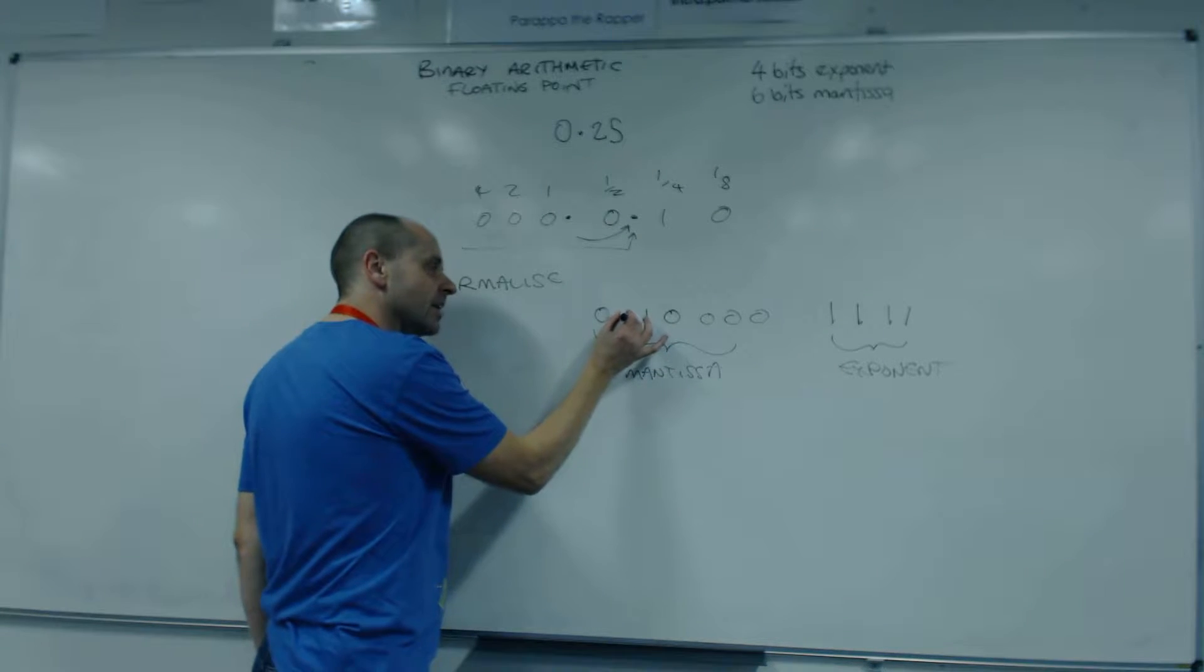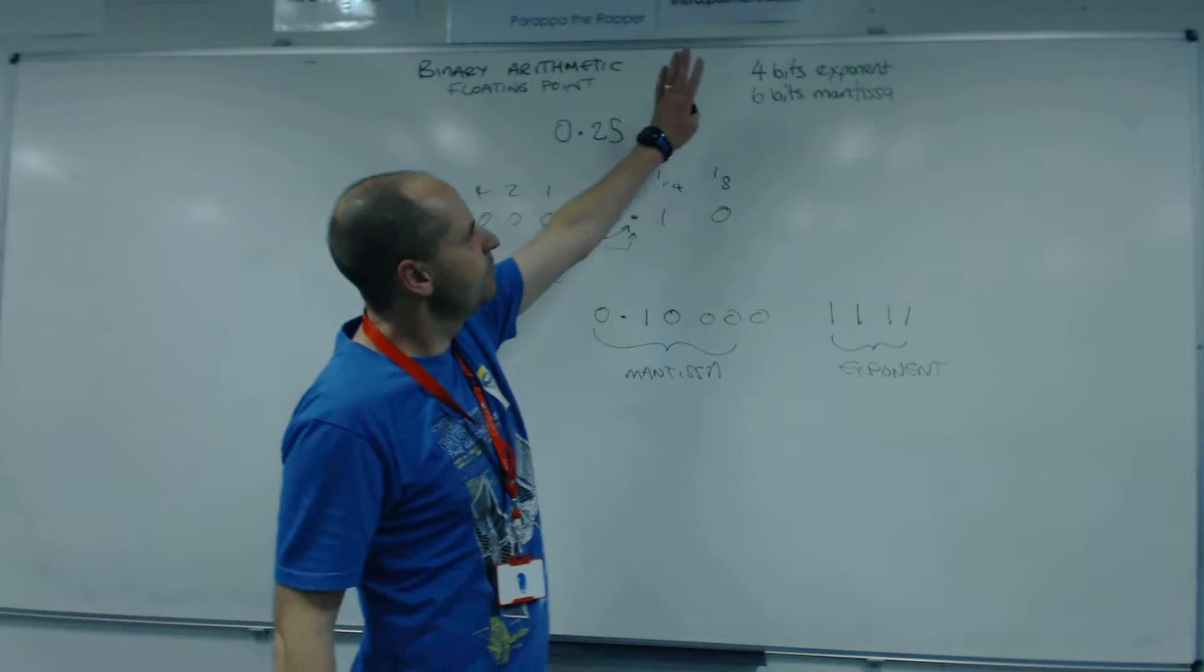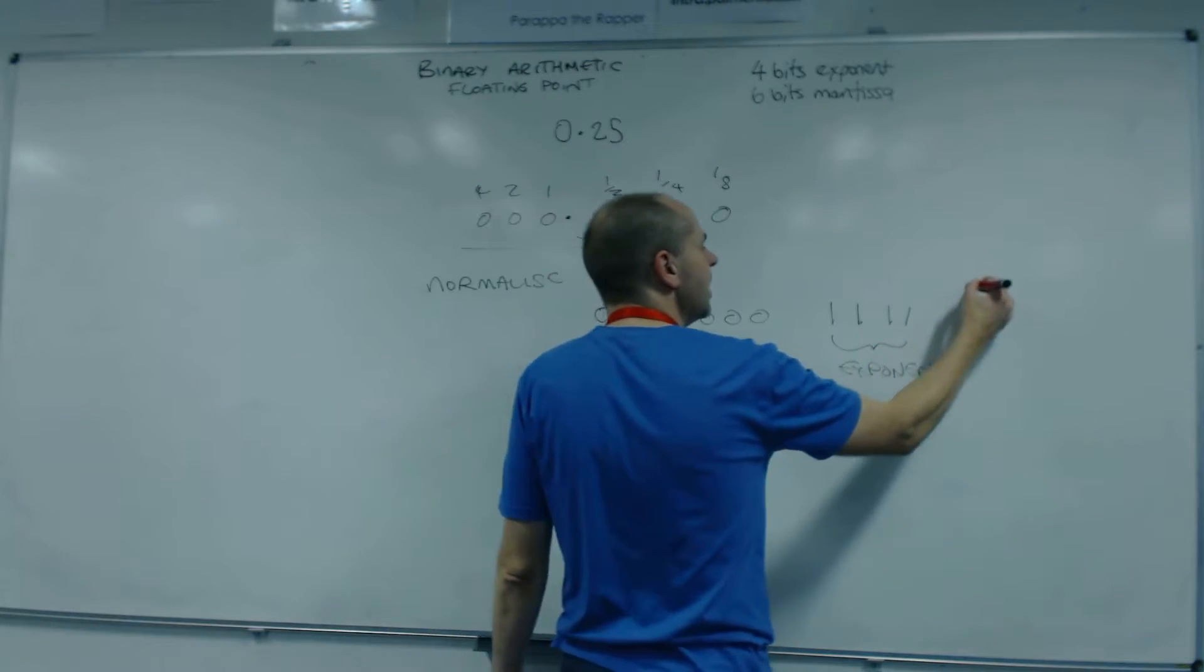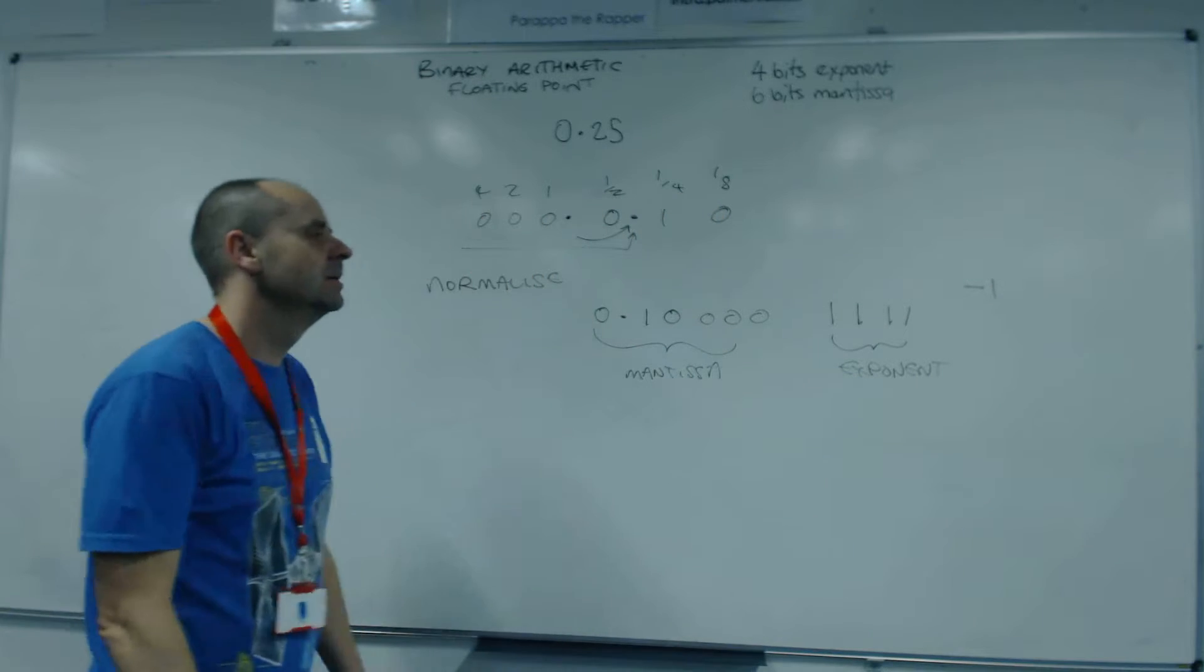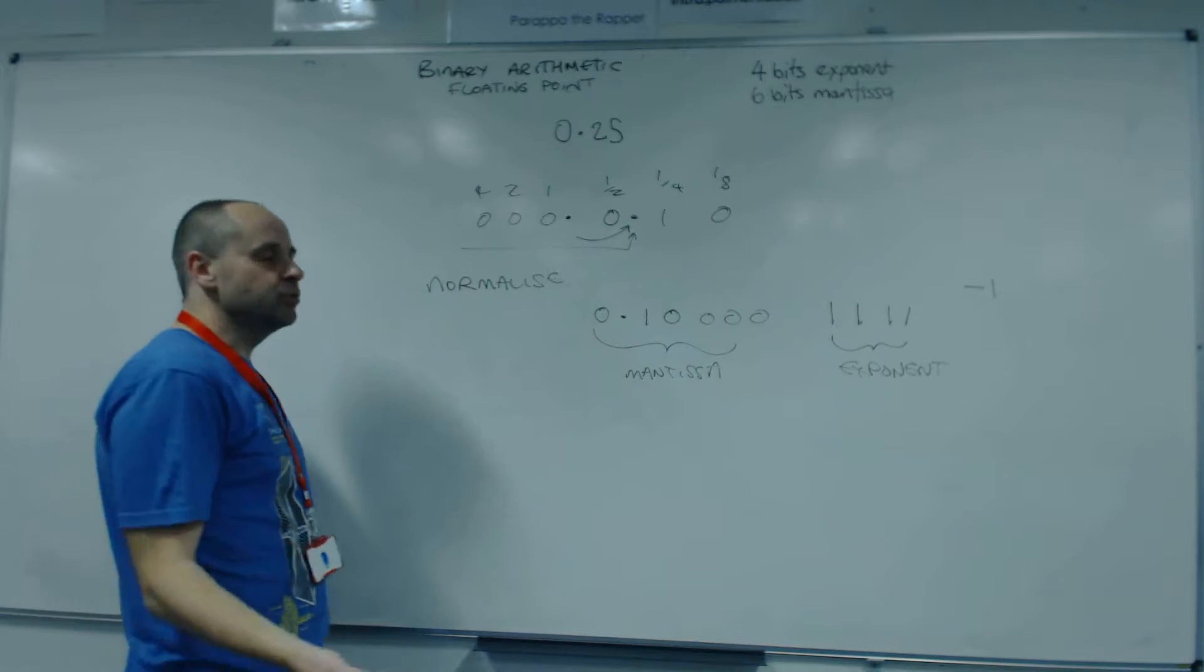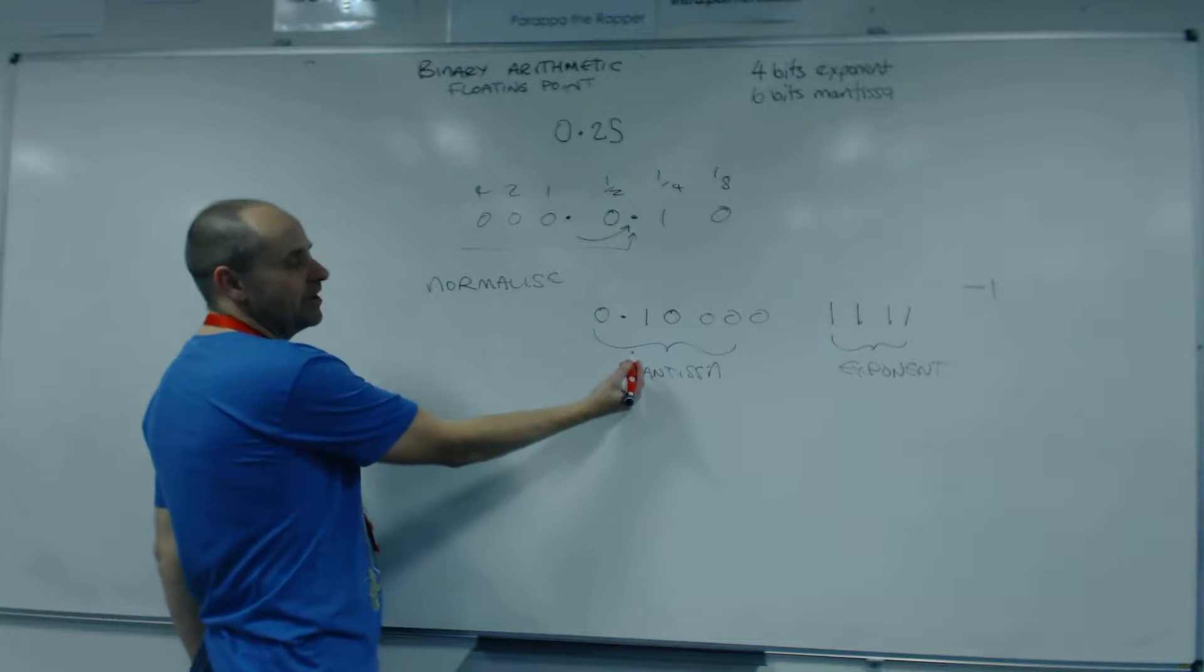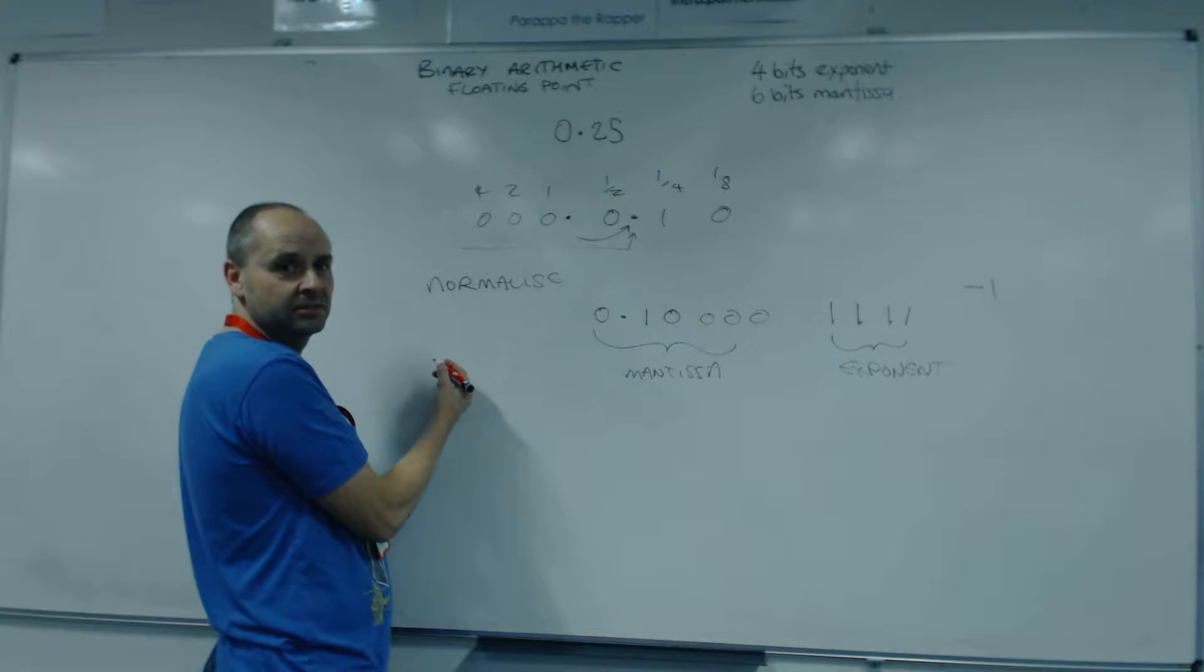So we put that in ourselves. We're going to put that in. Four bits for the exponent. We always start with the exponent. So we work out the exponent. We say, oh, it's minus one. Now, we know that minus one means make this number smaller. So we're going to move the binary point this way.